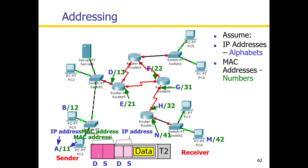I am going to check the destination and source IP address, and the MAC address at destination and source. I am going to get the first data about the destination and source IP address. For the source, the MAC address is 11, and for the destination MAC address, it is 42. Now, for the first hop, I am going to check — the destination MAC address is 13.